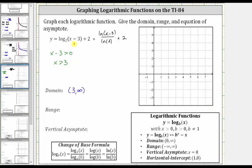To find the equation of the vertical asymptote, we set x minus three equal to zero and solve, which gives us x equals three, which is the equation of the vertical asymptote.